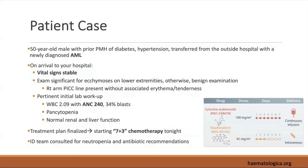You see the patient — vital signs are stable, a right arm PICC in place, exam is otherwise benign. Labs show neutropenia with an ANC of 240, meeting criteria for severe neutropenia. The patient is pancytopenic with normal renal and liver function. The primary team finalizes treatment, and this patient is going to be initiated on 7+3 induction chemotherapy.